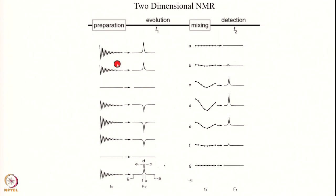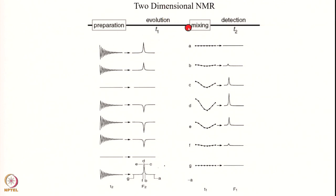This is illustrated explicitly: the first FID after Fourier transformation gives a line. The second FID gives a spectrum with slightly reduced intensity due to attenuation from evolution in T1. The third FID shows zero intensity. The fourth has changed sign. This happens because of the spin's evolution during T1 — positive, decreasing to zero, negative, increasing negative, then returning positive — a sinusoidal modulation. After Fourier transforming all FIDs along F2, we get a series of spectra showing this modulation.